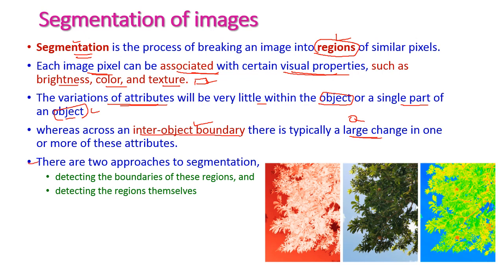There are two approaches in segmentation: first, detecting boundaries of these regions, and second, detecting regions themselves. In the original image, for example with tree and sky, the texture variation within the tree will be very little, but when comparing tree to sky, the color and texture is completely different, allowing us to identify which region is tree and which is sky.